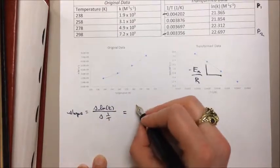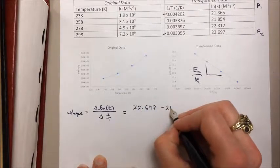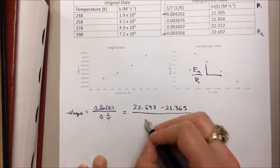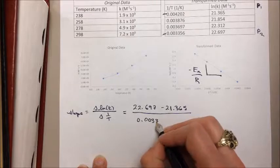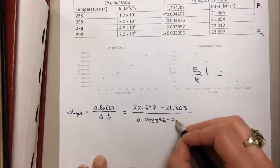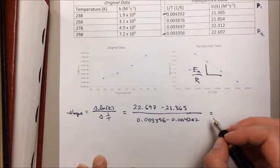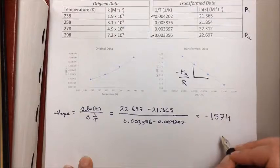So that's going to be 22.697 minus 21.365 over 0.003356 minus 0.004202. And if I crunch those numbers down, I get minus 1574 as the slope.